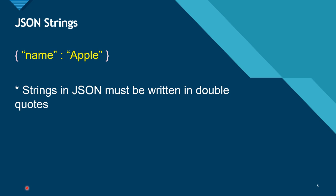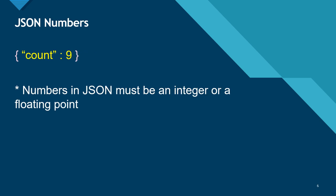Here is a JSON string — 'apple' is the JSON string and it is enclosed in double quotes. Numbers in JSON can be an integer or a floating point, and they are not enclosed in double quotes.